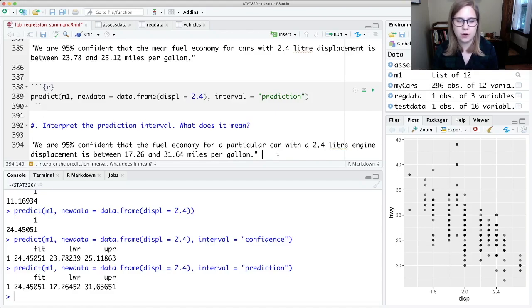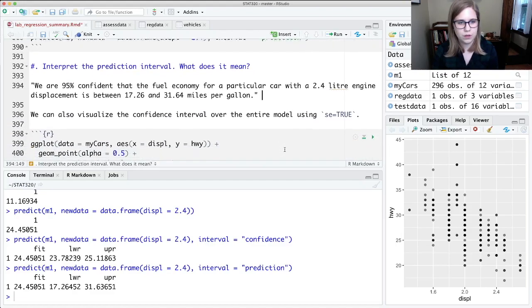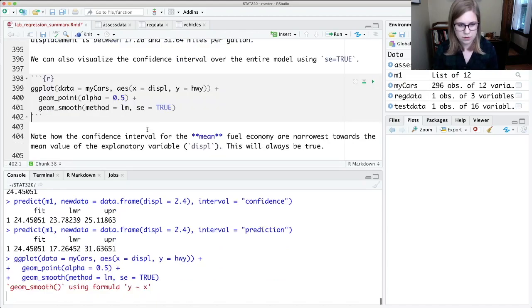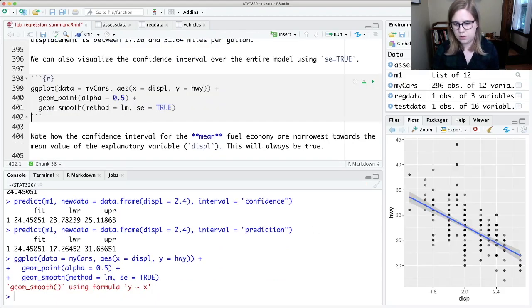We could also visualize that confidence interval over the whole model with se equal TRUE in our geom_smooth. So we could see like for 2.4, here is our confidence interval. And the confidence interval for the mean is always narrowest toward the mean value of the explanatory variable, and that'll always be true.